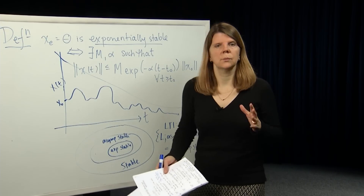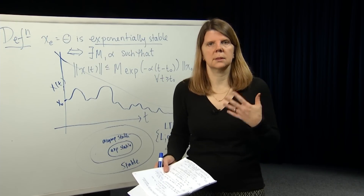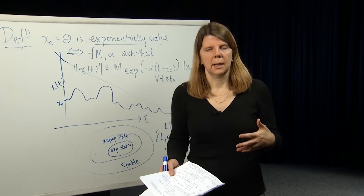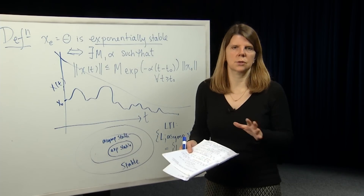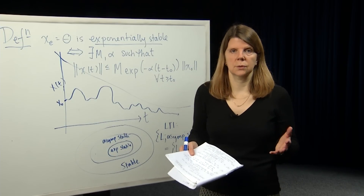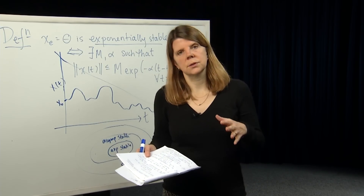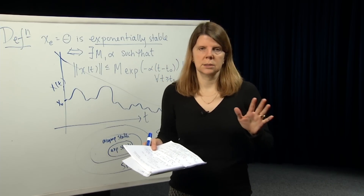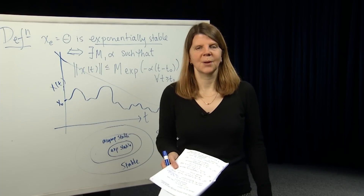So in this module, we just wanted to introduce the concepts of stability: stability, asymptotic stability, and exponential stability, and give some intuition about what that means in terms of the trajectory decay of those systems. In subsequent modules, we'll go back to the system models and try to characterize from the models themselves when a system falls into one of these three cases of stability. Thanks very much.